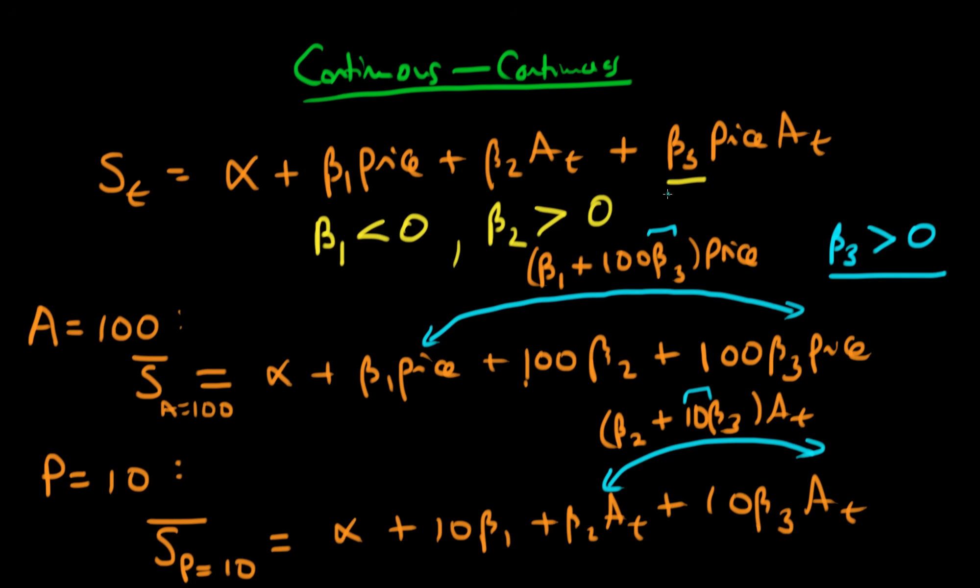So beta 3 generally, what does it mean? What do we learn from considering these two cases? Well, it shows that the effect of price depends on the level of advertising spend, and the effect of advertising tends to be determined by or tends to be affected by the level of price. So beta 3 is a way of adjusting the effect of price and advertising to take into account their multiplicative effects on one another.